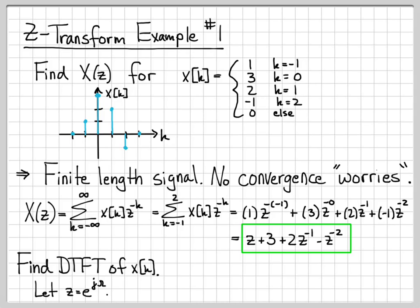Well that is the set of points Z equals e to the j omega, because e to the j omega is the unit circle. As omega changes from 0 to 2 pi, it maps out a circle in the complex plane. So I can get out X of omega by simply replacing every Z in this equation by e to the j omega. So that's what I'm going to do.